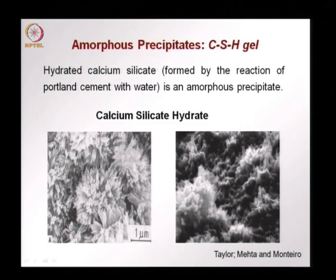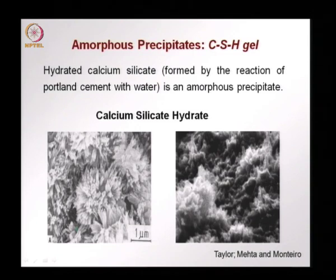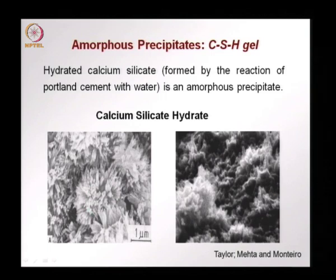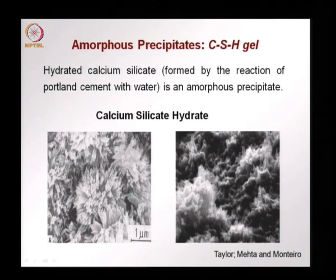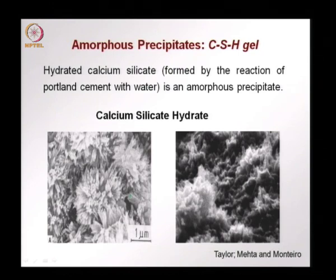The calcium silicate hydrate is the glue that binds the hydrated cement paste and therefore concrete together. Pictures from Taylor, Mehta and Monteiro show the gel structure of calcium silicate hydrate — a spongy structure with clumps of gel particles. Within these layers there is gel water, and there is also porosity outside. Though this structure is very defected and porous, it gives the strength required to make concrete a very useful material.